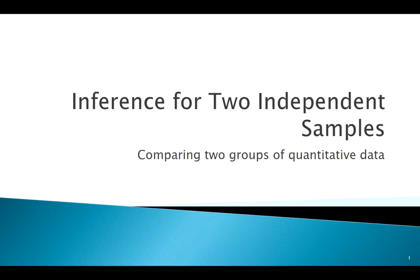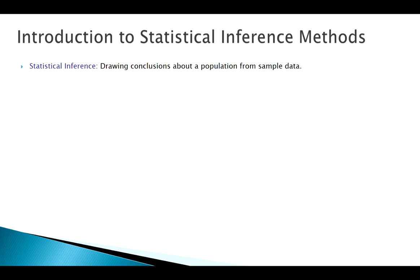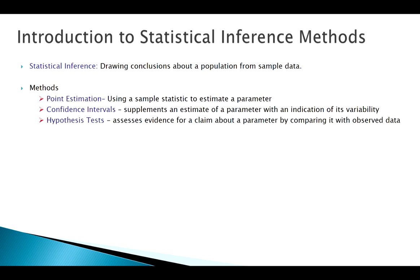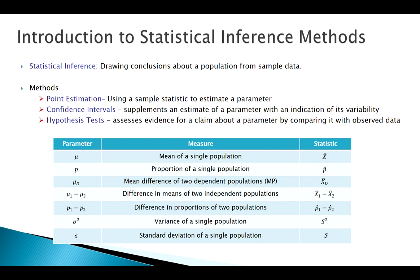Welcome back. Now we're going to talk about how we treat and analyze two independent samples. Remember where we're at — we're doing inference techniques: confidence intervals, hypothesis tests. We've got our one-sample stuff for mu and p, where mu is quantitative data and p is categorical data. Hopefully you've looked at matched pairs before and have an idea of what we do there.